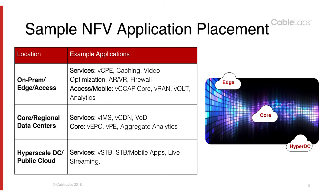For regional data centers or core clouds, services such as virtual IMS (IP Multimedia System), virtual CDN, video on demand, core services like virtual EPC, virtual provider edge, and aggregate analytics consolidating data from multiple edge environments can be placed there. For hyperscale data centers, things like virtual set-top box, mobile applications, live streaming, and similar services can be hosted in those locations.